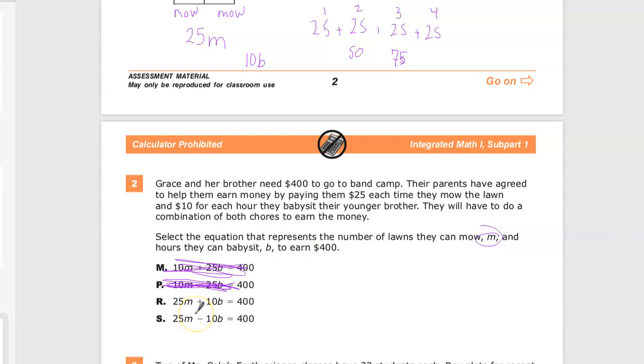But the subtraction thing makes literally no sense. It would almost be saying that they earn money every time they mow the lawn, and every time that they babysit their younger brother, they lose money. It's like the parents are charging them to babysit, which is the meanest thing that I can think. It's a pretty bold move and pretty mean to do that. Watch your younger brother for an hour, and it's going to cost you $10. What? It's crazy.